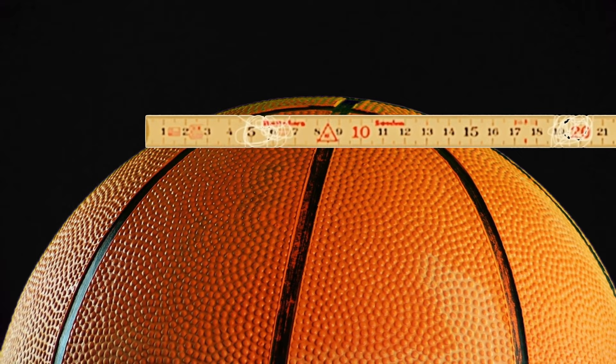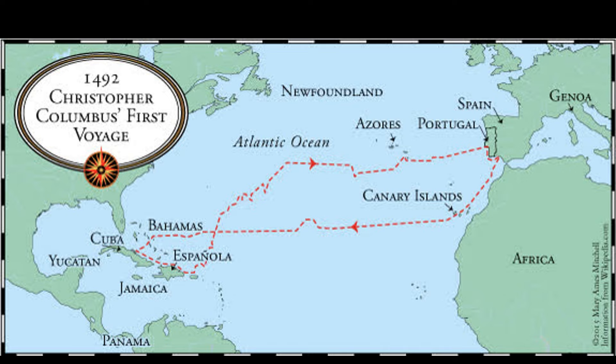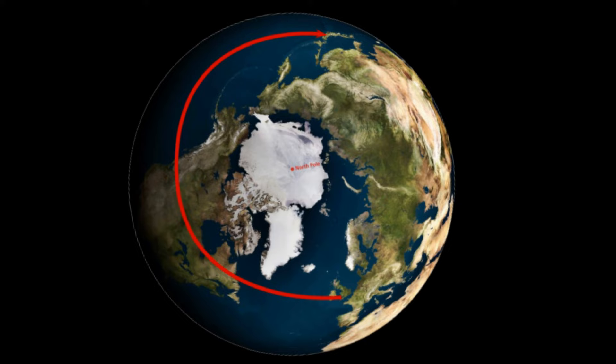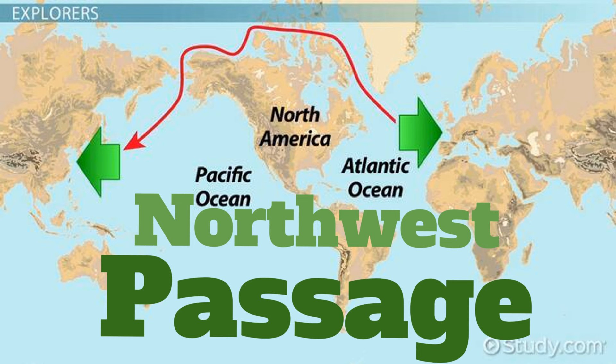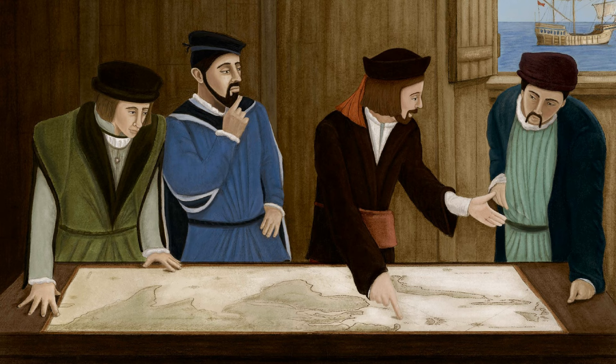Cabot thought Columbus had made a strategic mistake in his attempt to sail to the East Indies. Columbus had sailed in the middle latitudes, close to the equator, where the distance would be longest. Cabot thought he could get to the East Indies faster by sailing at a more northerly latitude, where the distance would be shorter. He proposed heading north, hoping to find a northwest passage to Asia and the East Indies.